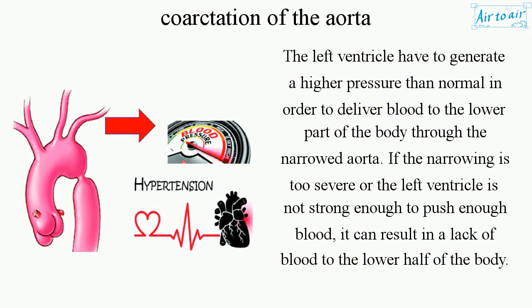The left ventricle has to generate a higher pressure than normal in order to deliver blood to the lower part of the body through the narrowed aorta. If the narrowing is too severe or the left ventricle is not strong enough to push enough blood, it can result in a lack of blood to the lower half of the body.